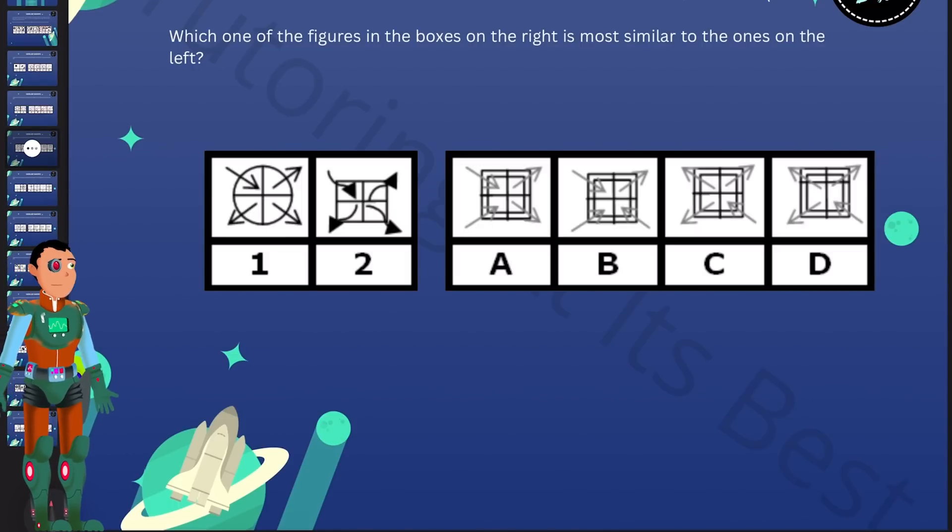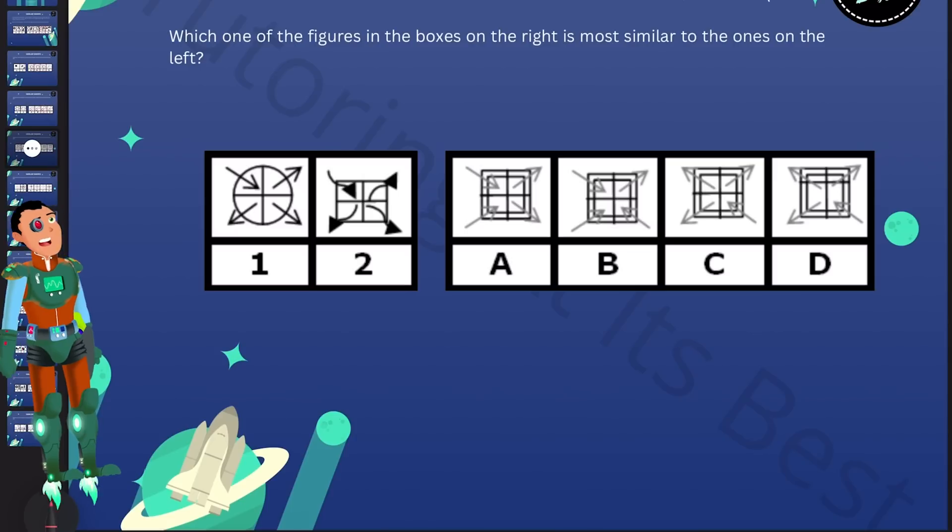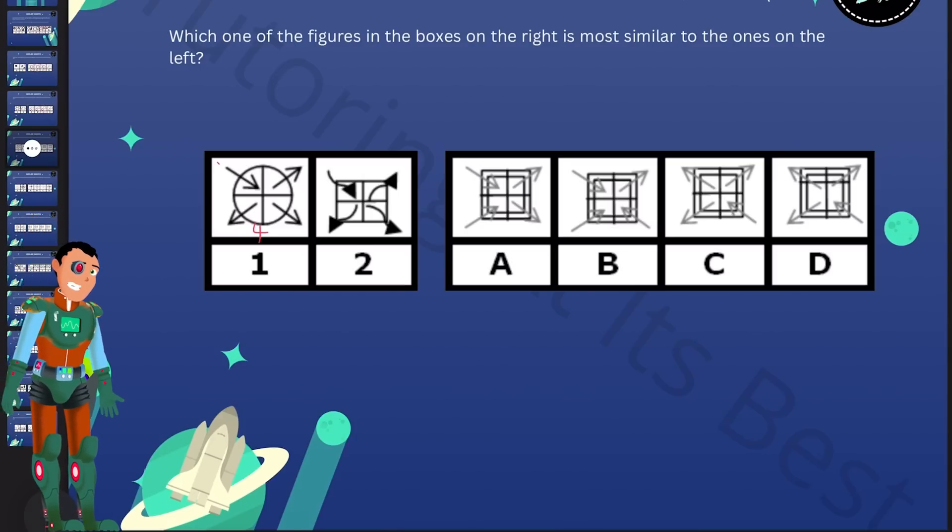And don't forget to pause the video at any given time, attempt the question and then press play to see the answers. Alrighty, so figure one and figure two. Well, they're made up of a main shape which is divided into four equal parts and four arrows. So we've got four equal parts, four arrows in both one and two.